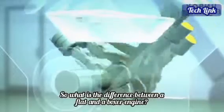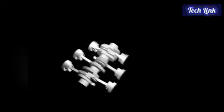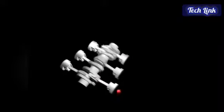So what is the difference between a flat and a boxer engine? A flat engine is actually a 180 V engine that works similarly to any other V engine. Each pair of pistons share the same crankpin, so one is in stroke 1 and the other is in stroke 2.